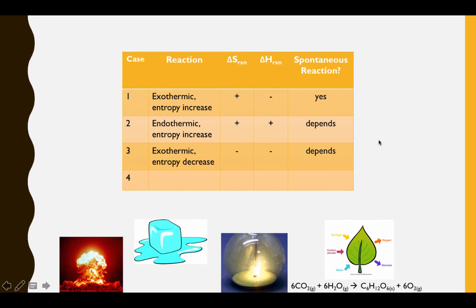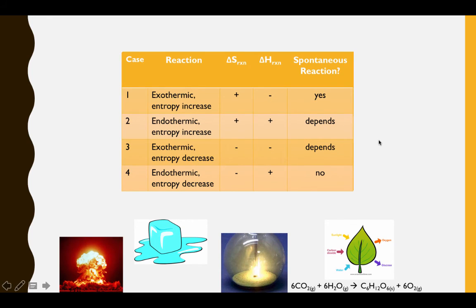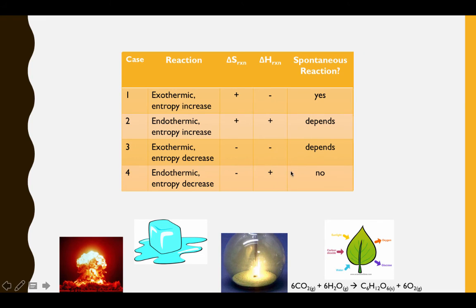Finally, looking at the process of photosynthesis, we see that this process is endothermic because it requires sunlight, and it involves a decrease in entropy since we have 12 moles of gas in the reactants and 6 moles of gas and 1 mole of solid in the products. This gives us a negative delta S and a positive delta H — both thermodynamically unfavorable factors — meaning this reaction will never occur spontaneously; it will always require outside intervention. When both factors are thermodynamically favored, a reaction will always be spontaneous. When both are unfavorable, a reaction will never be spontaneous.